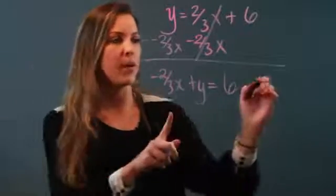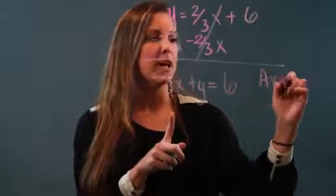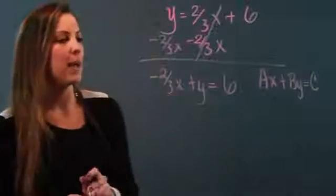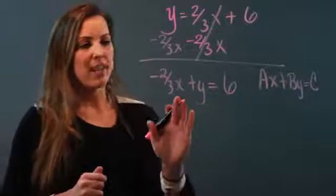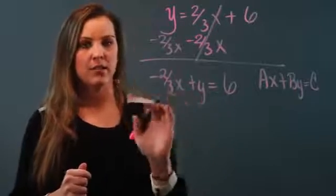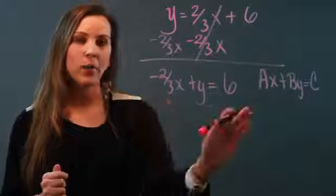Remember, my goal is for it to look like Ax plus By equals C. So what's wrong with it now is that I don't have integer coefficients. Negative two-thirds is not an integer. So how do I make it an integer?